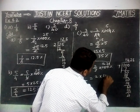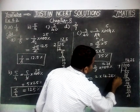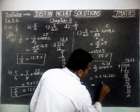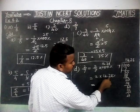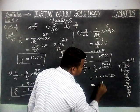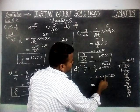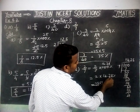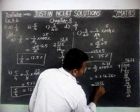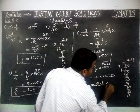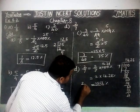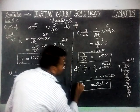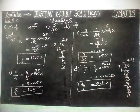So 2 into 14.28 percent. We are going to multiply: 8 twos are 16 remaining 1, 2 twos are 4, 4 plus 1 is 5, 4 twos are 8, 2 ones are 2. Here we have 2 decimal points, so 28.56 percent. Therefore, 2 by 7 is equal to 28.56 percent.